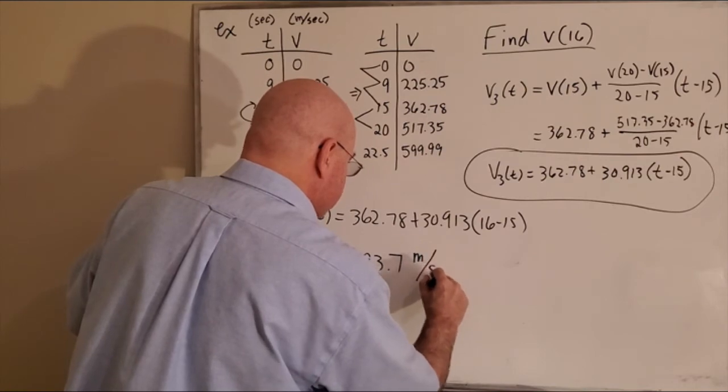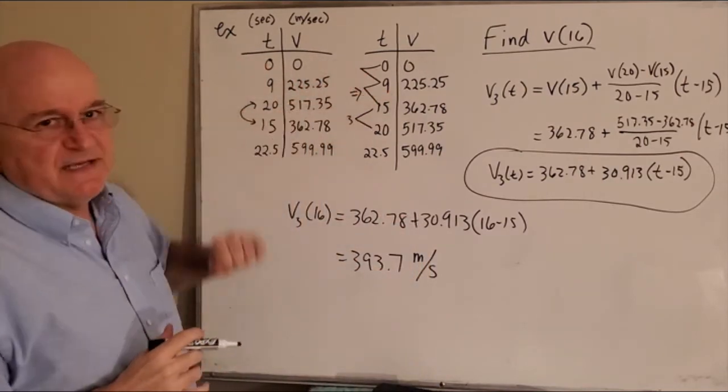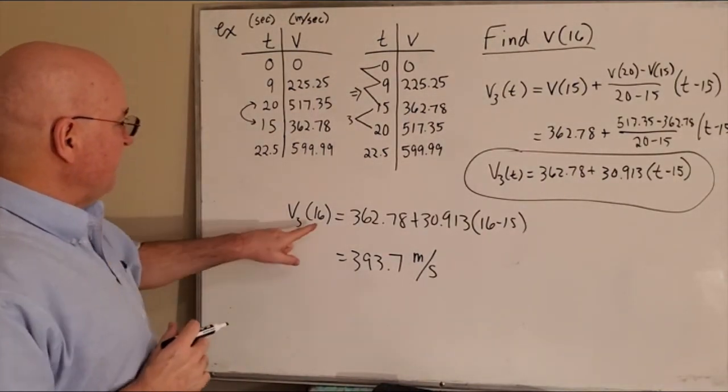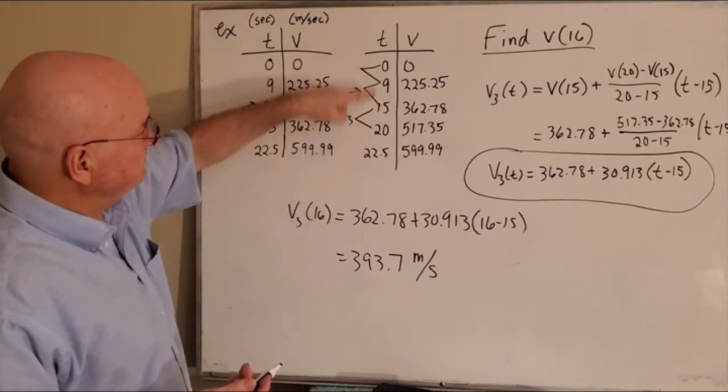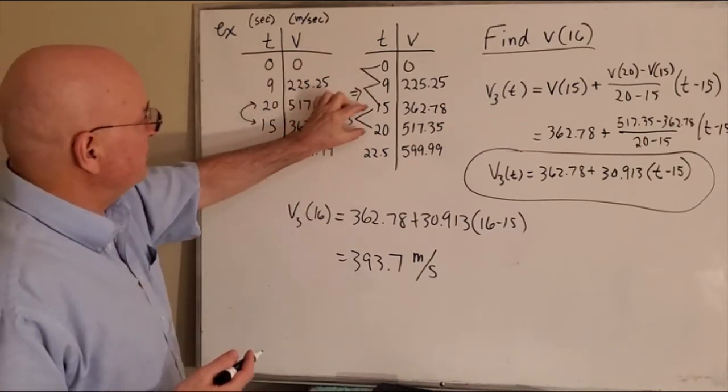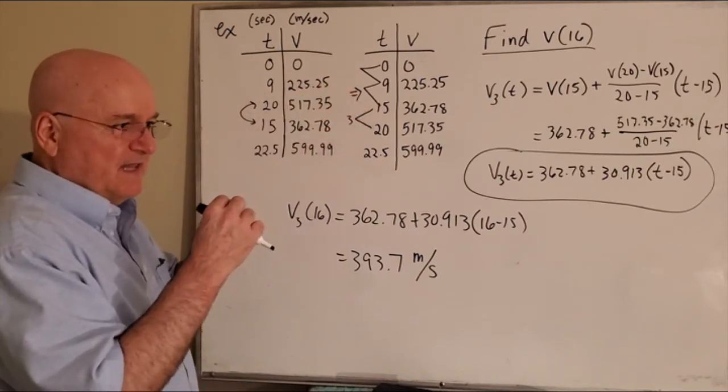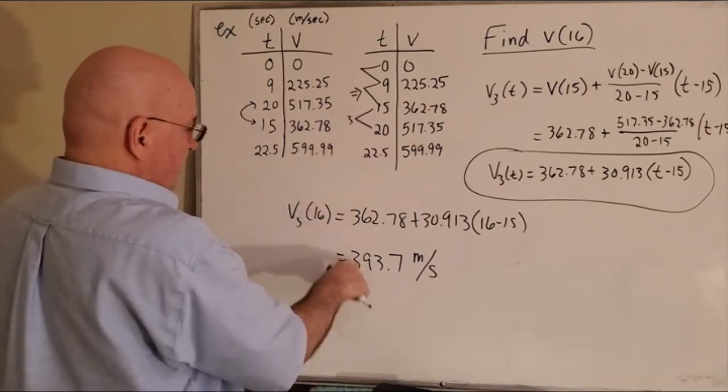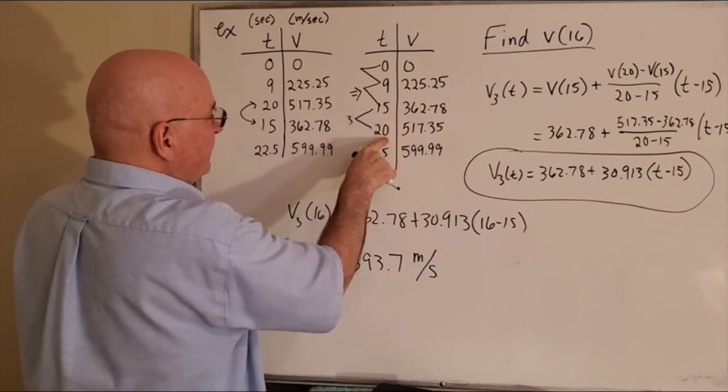So all we're doing is using these five data points, which isn't very much, with a degree one linear spline to estimate the velocity at a different value. So we chose these two data points and connected a line segment between them. Notice that V16, 393, is much closer to 15 than it is to 20 because it's just a straight line connecting those two values.